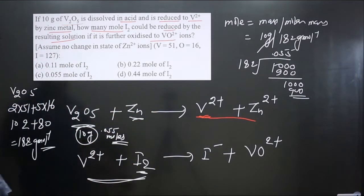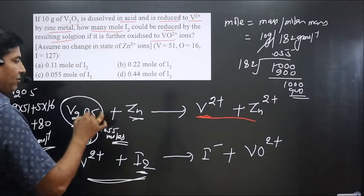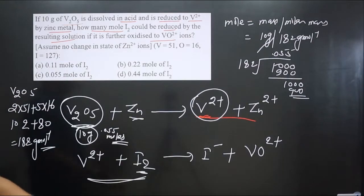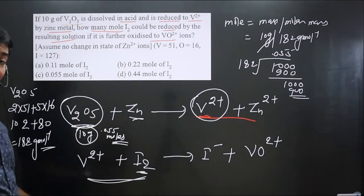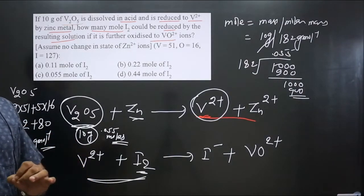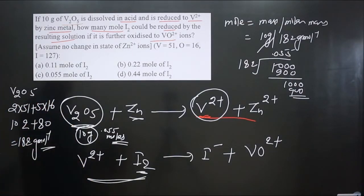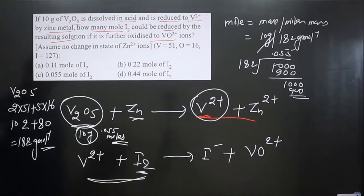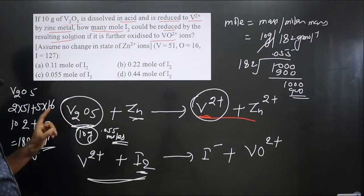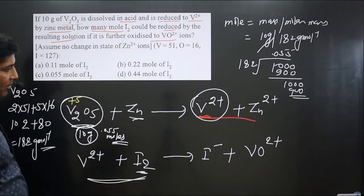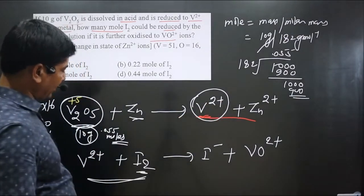Now we equate their equivalences: equivalence of V2O5 equals equivalence of V²⁺. For this we need to calculate the N-factor. In V2O5, vanadium is in +5 oxidation state (by crisscross). In V²⁺, vanadium is in +2 oxidation state.